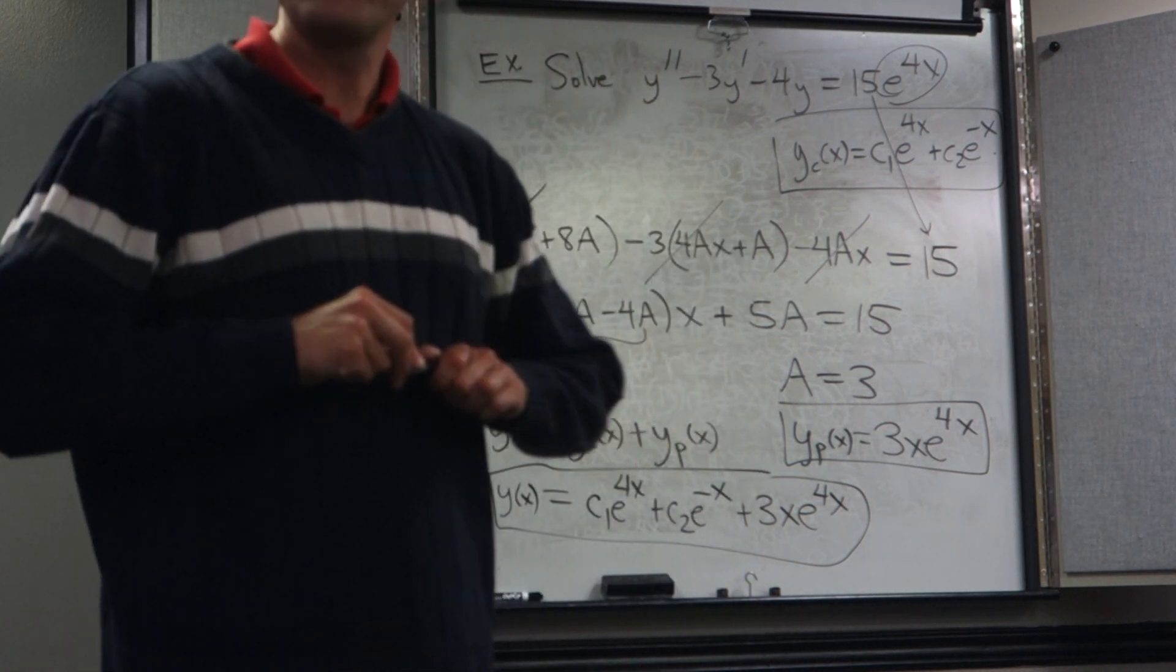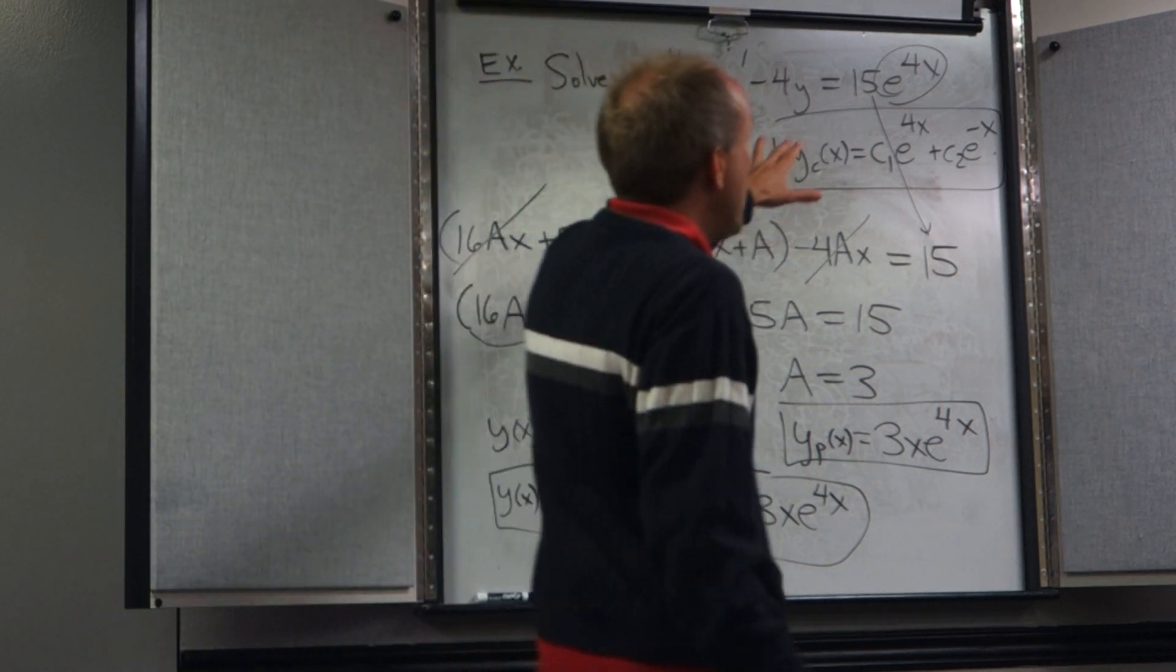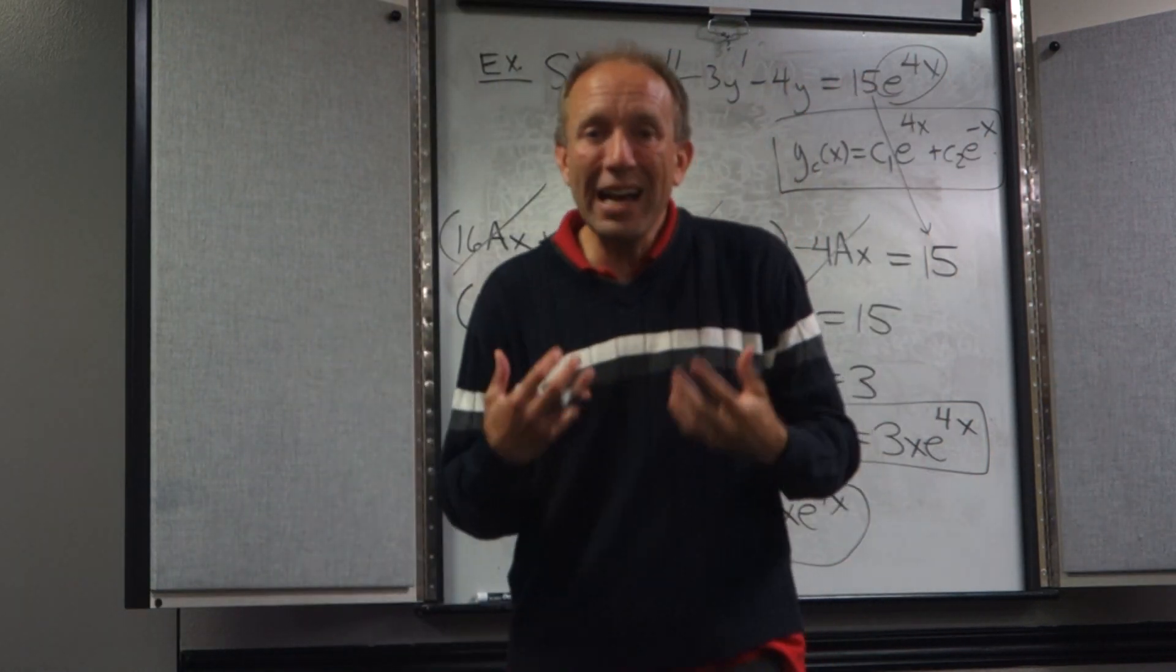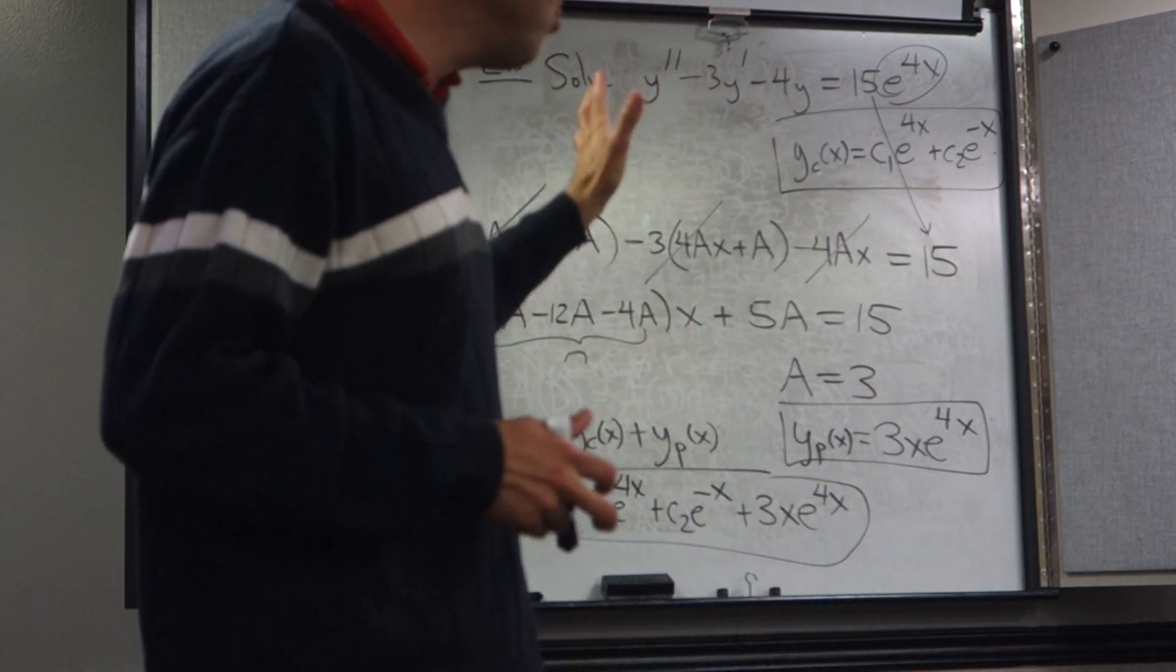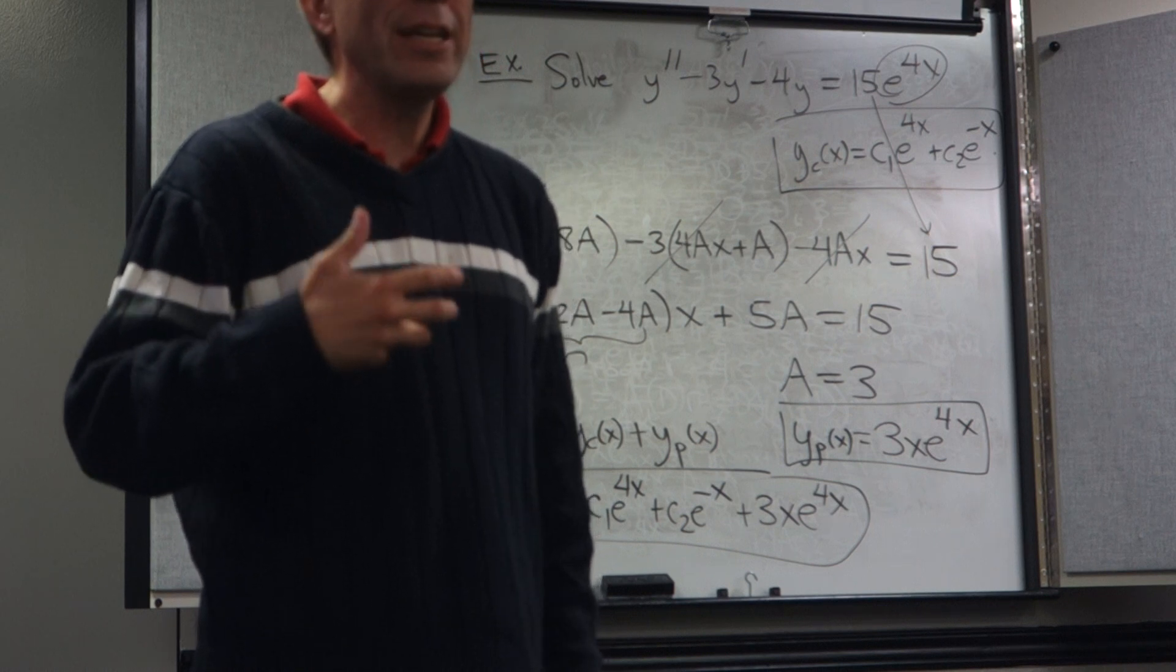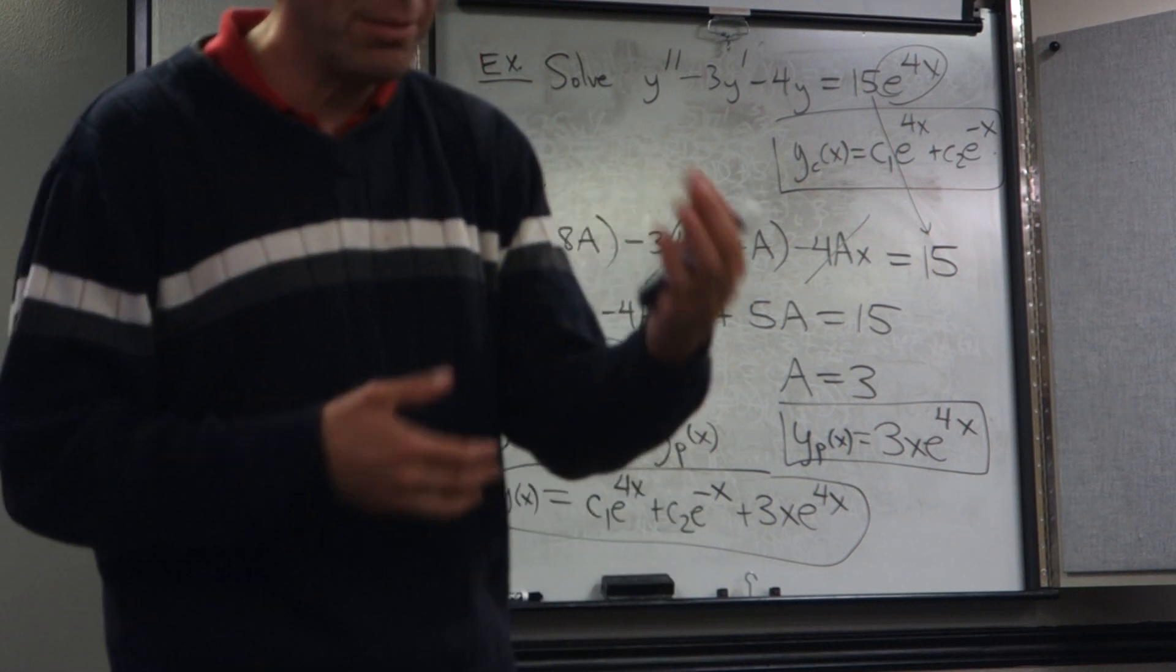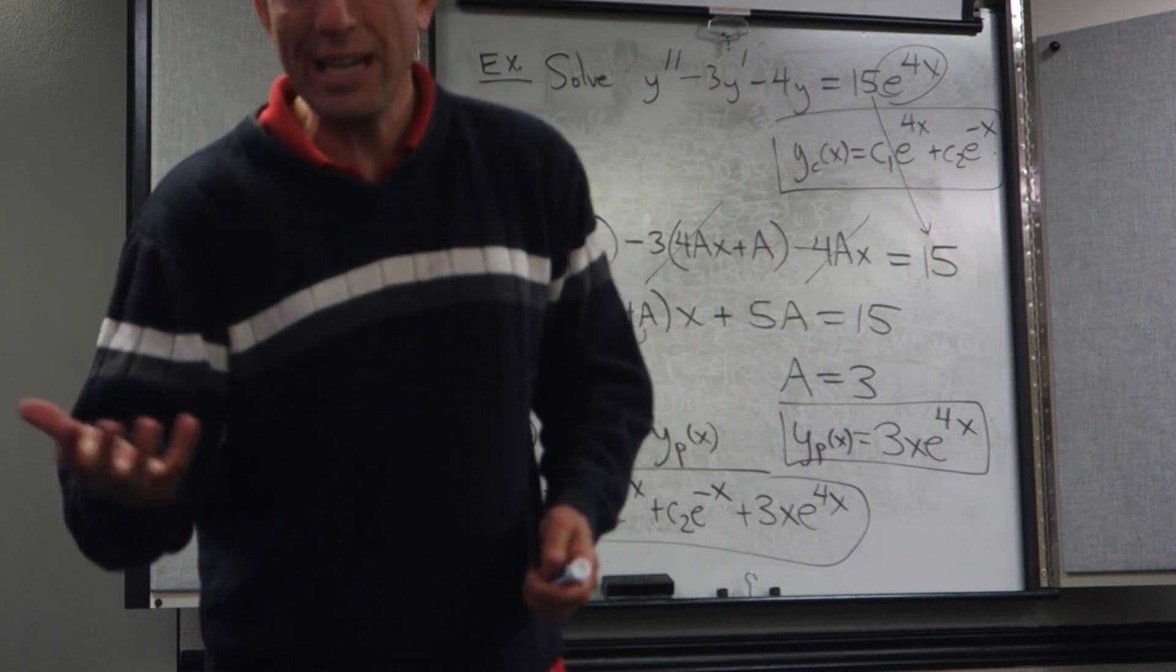Again, it is a three-step process. If you know how to annihilate the function on the right-hand side, you can use this method. First, solve the corresponding homogeneous differential equation by using the material from the previous section.